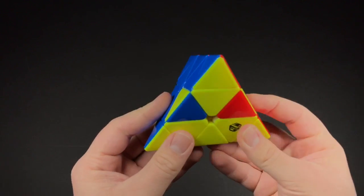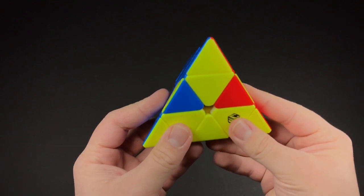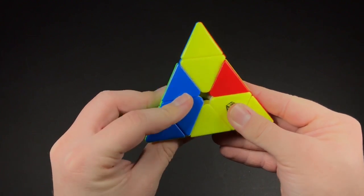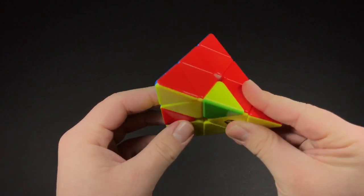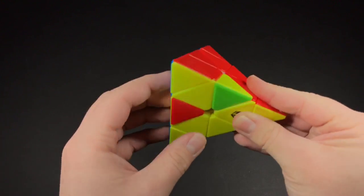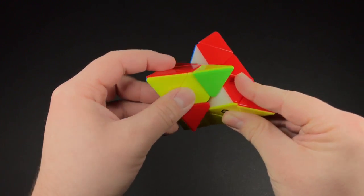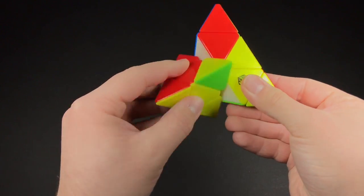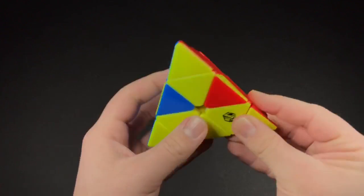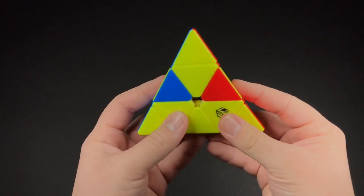So how I finger trick it is I just do this, rotate it, and then as soon as I rotate it I move this up, and then just do the rest of the algorithm. And then performed fast.